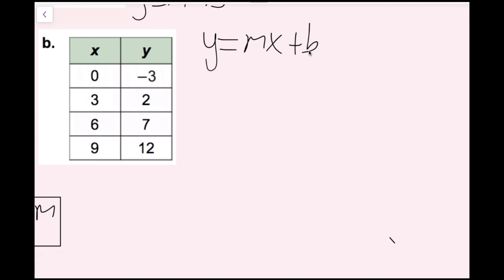I want to find the y-intercept from the table. The y-intercept is the value of y when x equals zero. I see that x equals zero right here, and the corresponding y-value is negative three. So I know that b equals negative three.